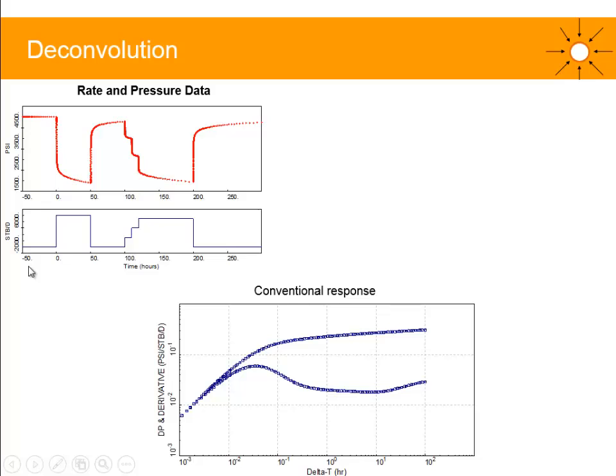Let's imagine a well with this pressure and rate data. We've got prediction startup here. Here's the first flow, the first PBU with pressure increasing this way, flow after flow test and a main flow here, and the second PBU.